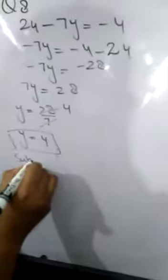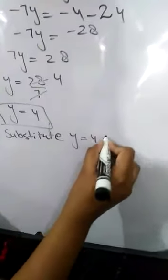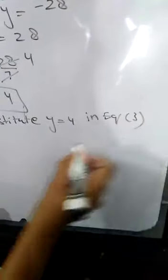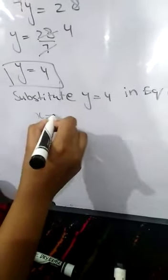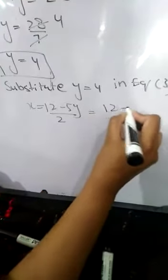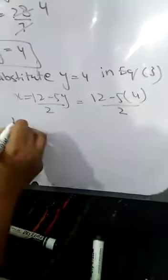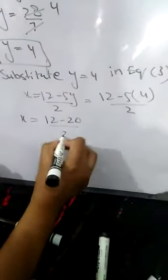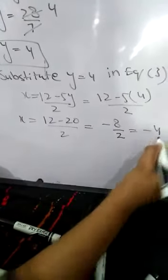Now substitute y equals 4 in equation 3. In equation 3, we have x equals 12 minus 5y over 2. 12 minus 5, what is the value of y? 4 over 2. 12 minus 20, 5 times 4 is 20, over 2. That is minus 8 over 2. The x value we have is minus 4.